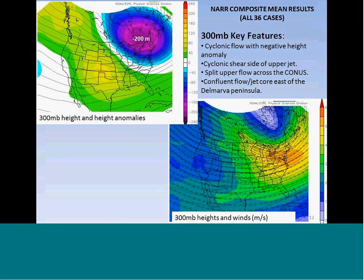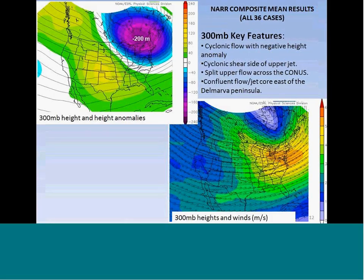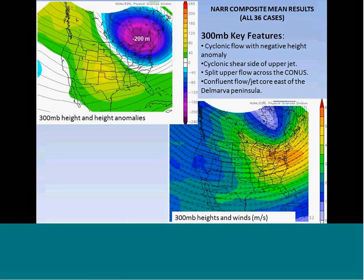Let's look at some key synoptic features. At 300 millibars, in the mean across 36 cases, we see a length of trough across southeastern Canada extending southward into New York and New England with a 200-dekameter normal anomaly compared to climatology. The 300-millibar heights and winds show evidence of split flow, with a northern branch jet extending from the Canadian prairies across the Great Lakes and off the mid-Atlantic coast, some evidence of a subtropical jet from northwestern Mexico across the southeastern U.S., and generally cyclonic flow across northern New York and New England.